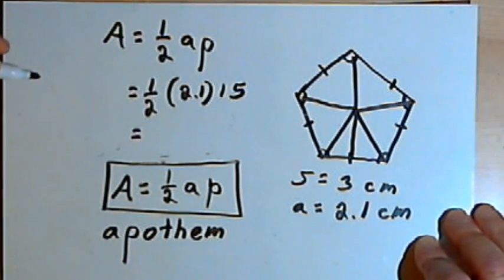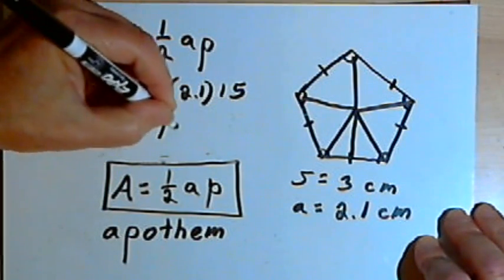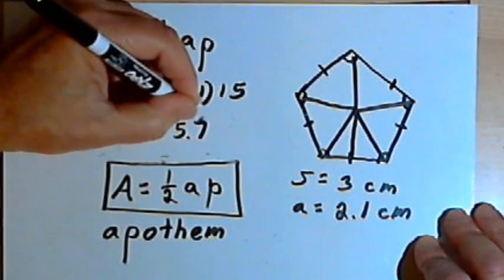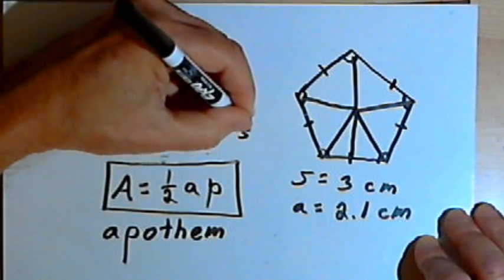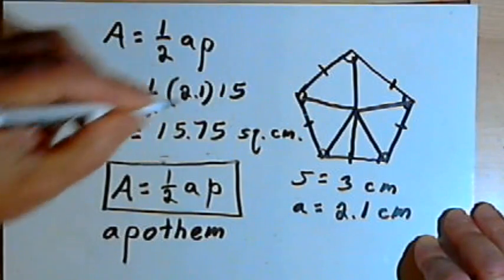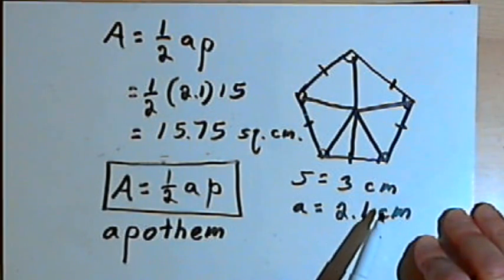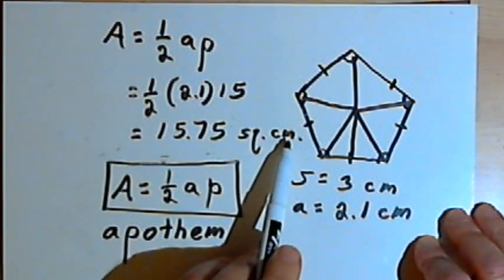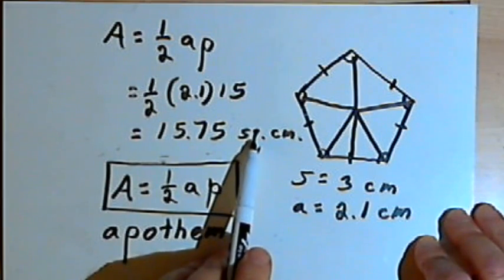And now if I multiply all this out, I'm going to find that it equals 15.75 square centimeters. Don't forget, if you've been given the units, you've got to put the units in and the fact that they're now square units.